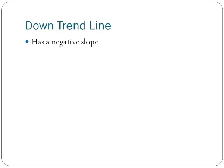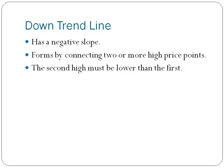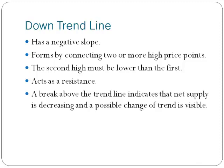The downtrend line has a negative slope. It is formed by connecting two or more high points; the second high must be lower than the first. The downtrend line acts as resistance and indicates that net supply is increasing given price declines. A break above the downtrend line indicates that net supply is increasing and a change of trend could be imminent.